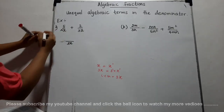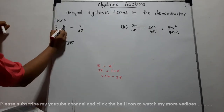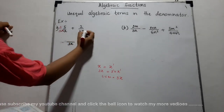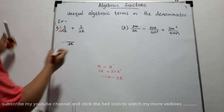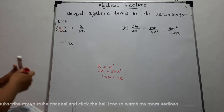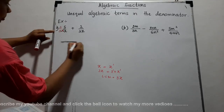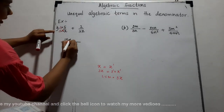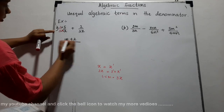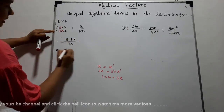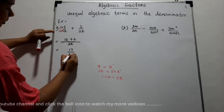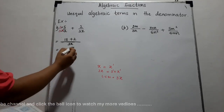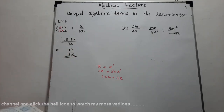The common denominator is 3x. To obtain 3x in the first fraction, we multiply numerator and denominator by 3. For the second fraction, 3x does not need to be multiplied by any number. So the common denominator is 3x. Then 3 times 5 is 15, add 2. 15 plus 2 equals 17. The answer is 17 over 3x.